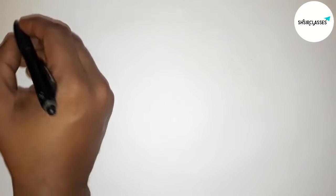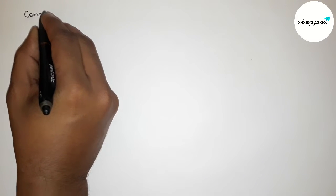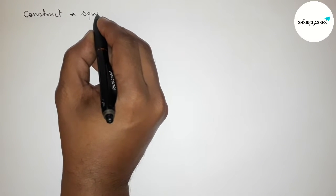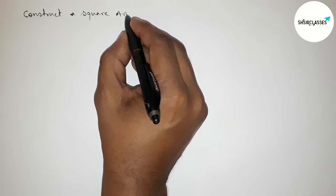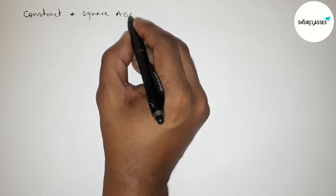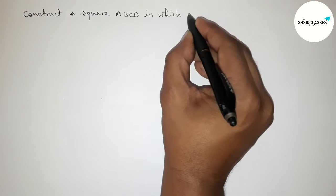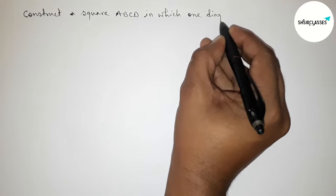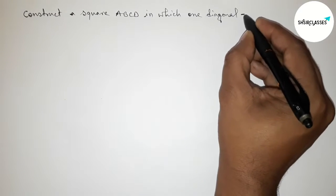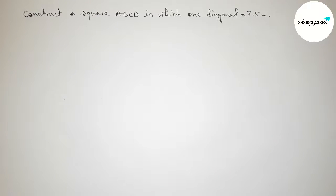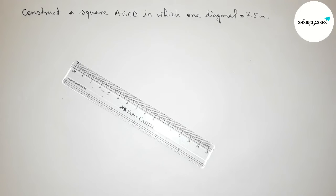Hi everyone, welcome to Si Share Classes. Today in this video we have to construct a square ABCD in which one diagonal equals 7.5 centimeters. Please watch the video till the end. Let's start.